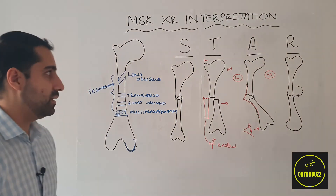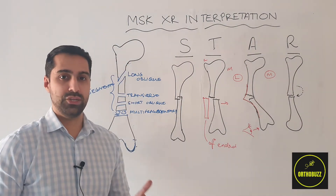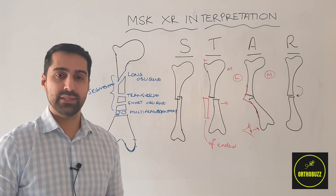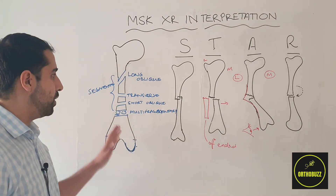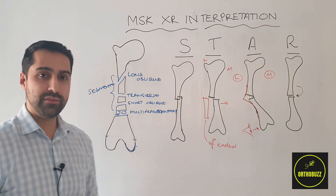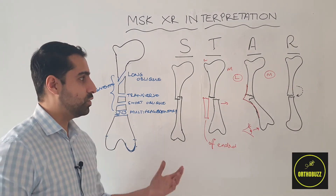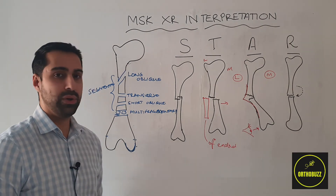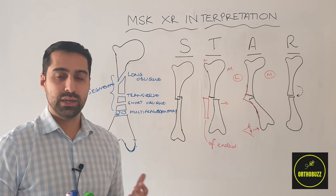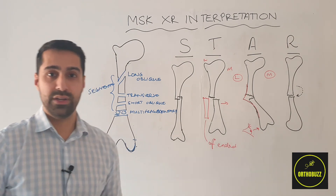So once we've done this — ensured we have the correct patient with the correct details and the correct image, identified which bone and what fracture pattern we have, and described how the two fractured ends of the bone relate to each other — we can clearly summarise our findings.